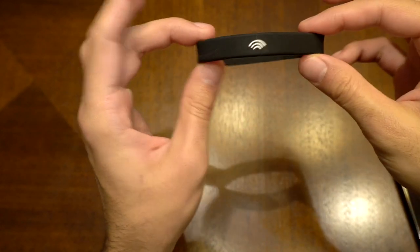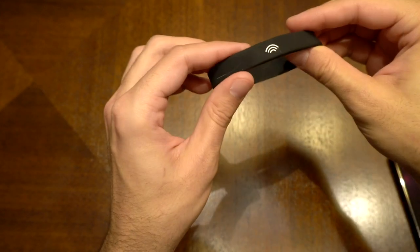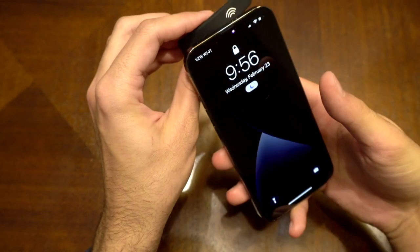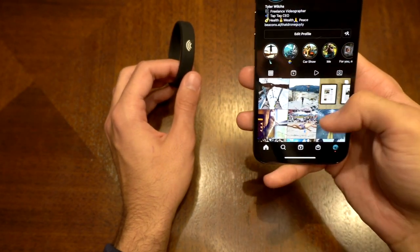But on the front side, we just have a symbol that represents where the NFC chip is because it's not the whole band that has NFC. It's really just the top of it. When you tap a phone to it, a notification will appear here. In this case, it goes right to my Instagram.